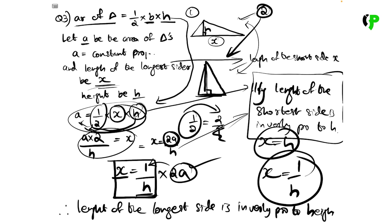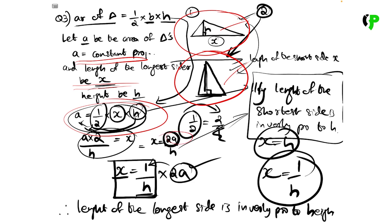Let's check the second part. If you want to write the function, x is equal to 1 by H, then it is inversely proportional. So the length is inversely proportional to H. Clear? That's it — we will see the next video. Thank you.